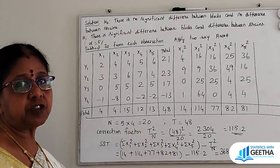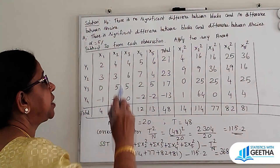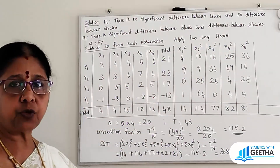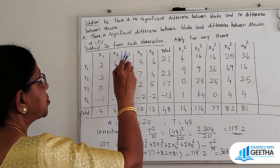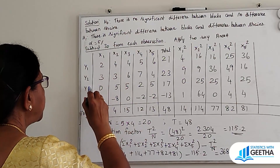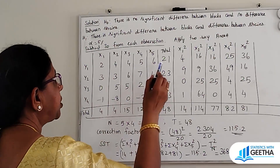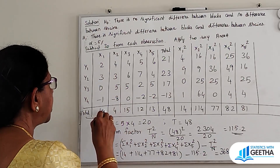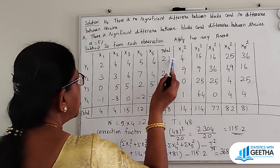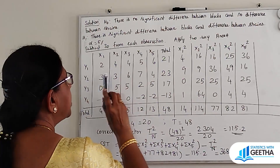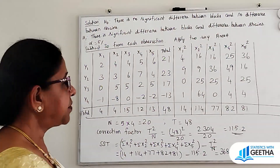We will subtract 13 from each observation since one constant subtraction will not affect the final result. After subtracting, we apply two-way ANOVA. The block totals are: summation X1 = 4, X2 = 4, X3 = 15, X4 = 12, X5 = 13. The strain totals are: summation Y1 = 21, Y2 = 23, Y3 = 17, Y4 = −13. The grand total T = 48.